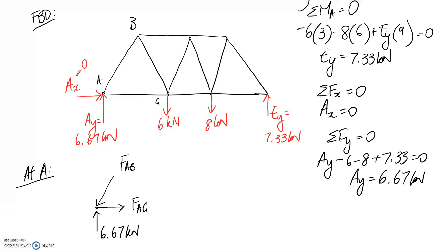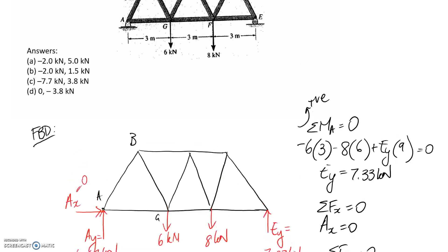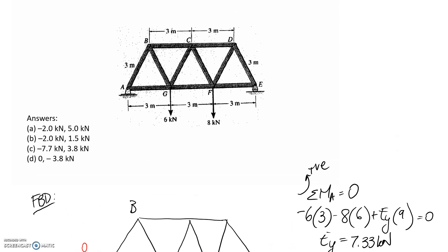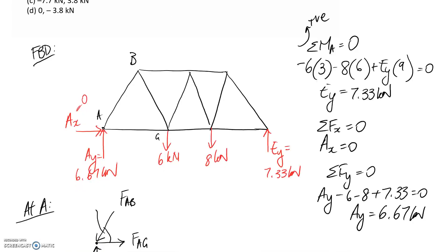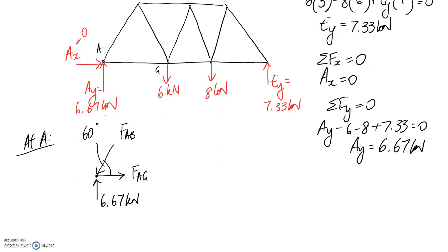The other thing we need on this diagram is the angle at which FAB acts in here. Since it's a two force member, we know the direction of the member is the direction of the force. And we can see here that this is basically an equilateral triangle. We've got two 3 meter sides. This one will end up being a 3 meter side as well. And we know equilateral triangles have 60 degree angles all the way around. So that means the angle between these two members is 60 degrees. And we have all the information that we need to be able to solve this free body diagram.